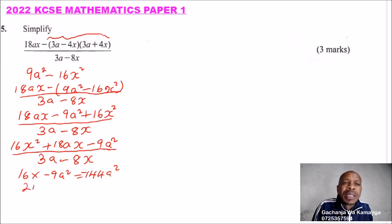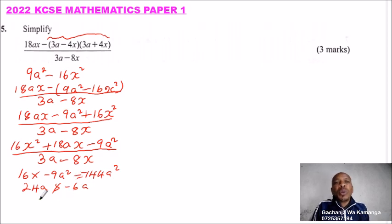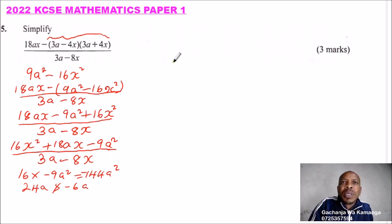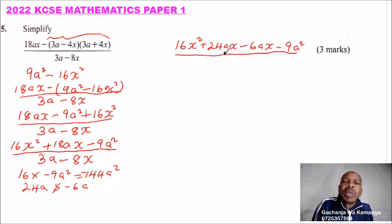The two numbers are 24a and minus 6a. When you multiply these two, 24a multiplied by minus 6a, that gives you minus 144a squared. When you add, 24a plus minus 6a, you get 18a. So we rewrite our expression as 16x squared, and instead of 18ax we write plus 24ax minus 6ax, and this is minus 9a squared. So we have modified our quadratic expression, divided by 3a minus 8x.